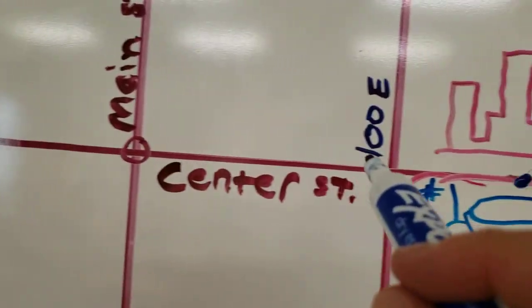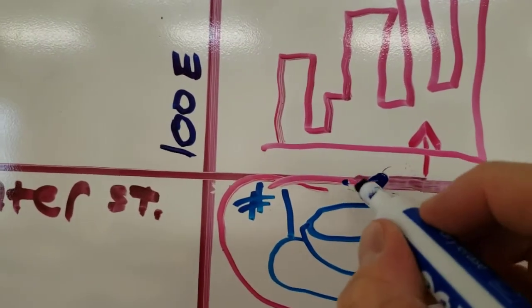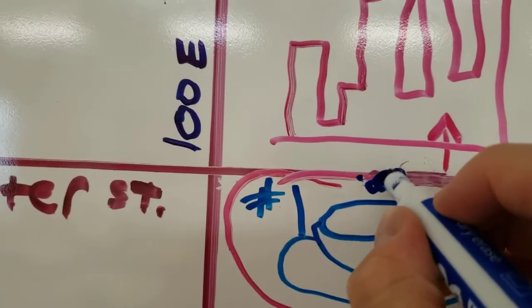So, we go one, and then halfway to 200 East. Puts us right here.